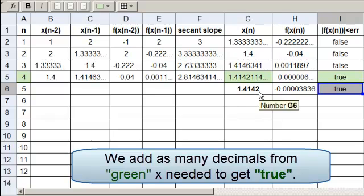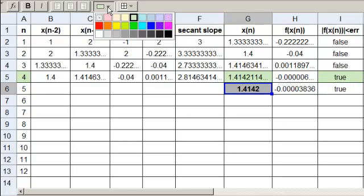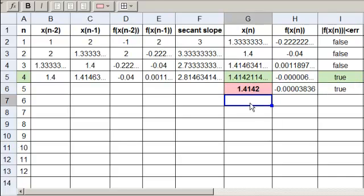If it's not true, that means that this 2 is not close enough. So then we would add the next decimal here, a 1. And then if that doesn't still give us true, we would add the next decimal until we get a true here. But we have true, so this is our answer. Let's mark it with pink. So 1.4142 gives us a function value that is less than 10 to the minus 4. We can see it right here.